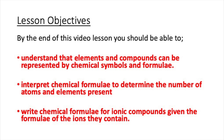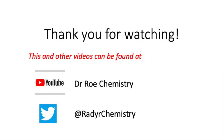To conclude our video, let's look back at the lesson objectives. By the end of this video lesson you should be able to understand that elements and compounds can be represented by chemical symbols and formulae, interpret chemical formulae to determine the number of atoms and elements present, and write chemical formulae for ionic compounds given the formulae of the ions they contain. Please check out our YouTube channel, Dr. Rho Chemistry, and our Twitter site at Radachemistry, which contains lots of chemistry information and links.